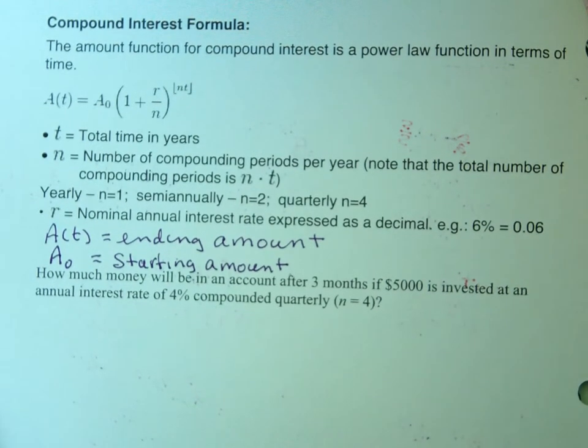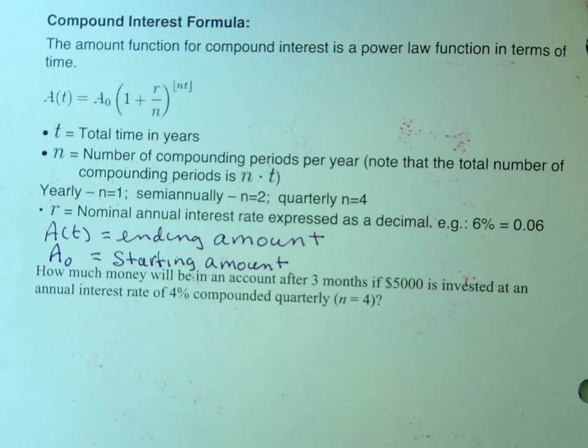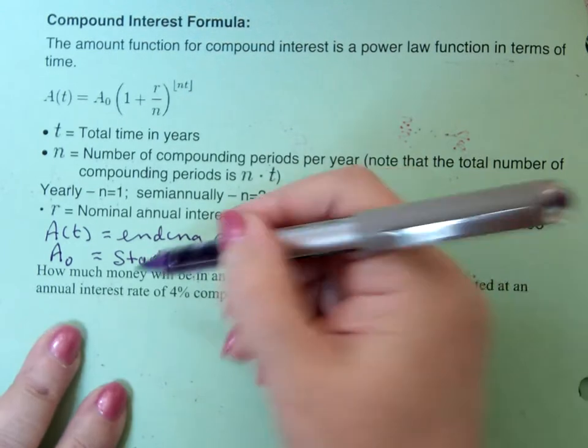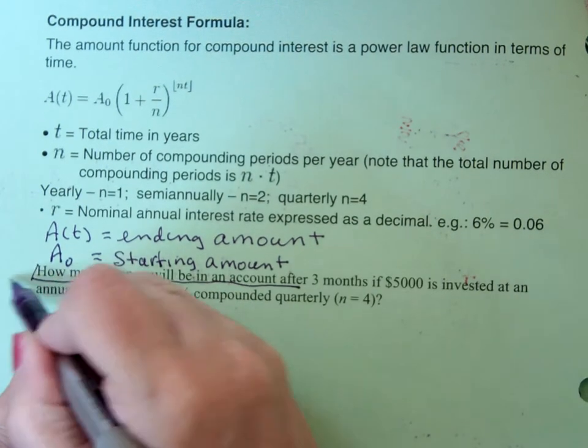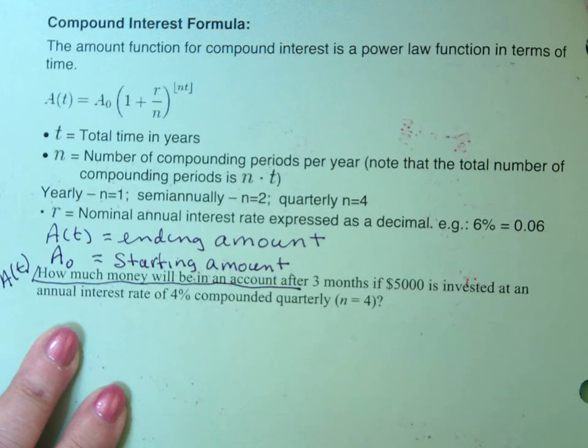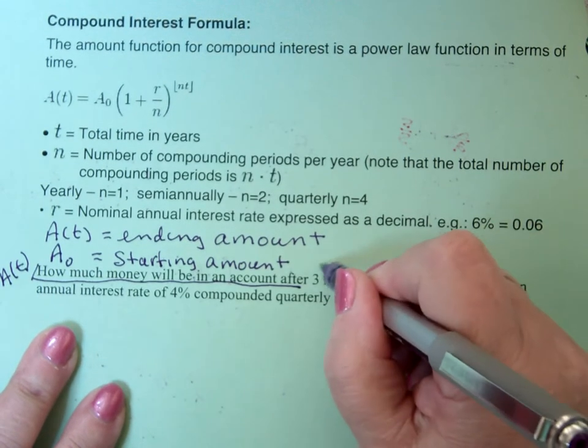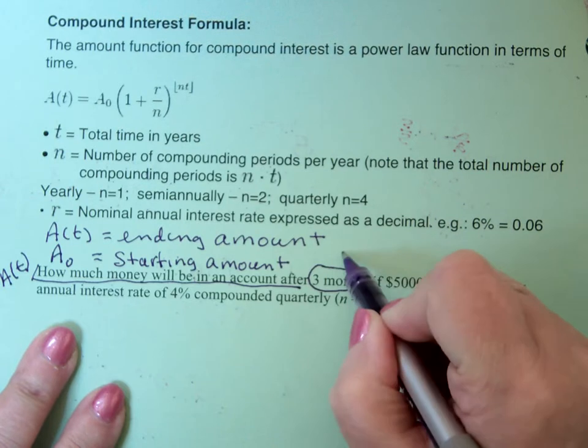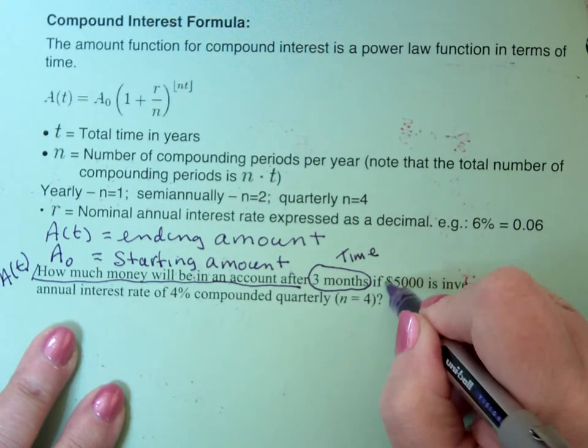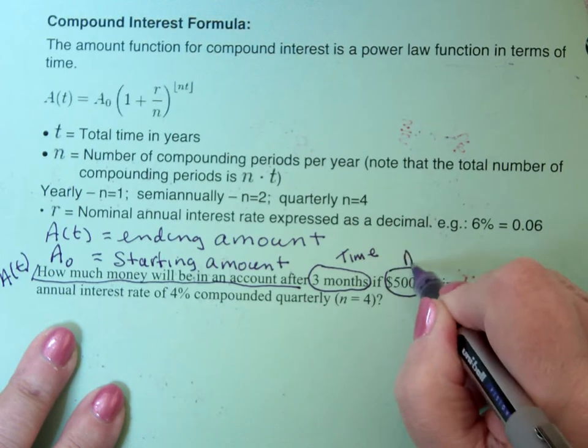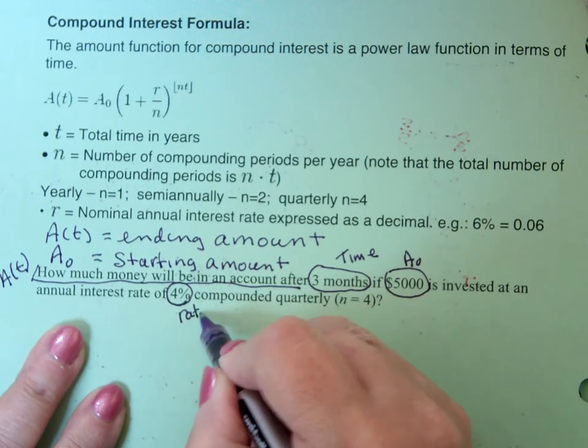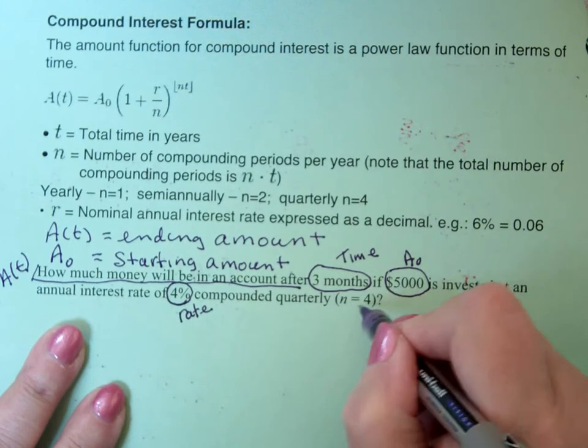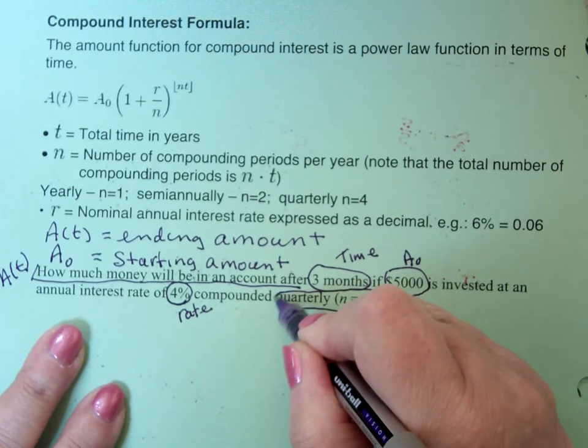We're only interested now in, if I put so much money in, how much money am I going to get out? So that's the put in X, get out Y with the information they give me. And it says, how much money will be in the account? So how much money will be in the account? That says I'm looking for A of T. So I'm looking for the end amount. After three months, that's time. If $5,000, that's the beginning amount, is invested at an annual rate of 4%, compounded quarterly. So they give you that N equals 4.